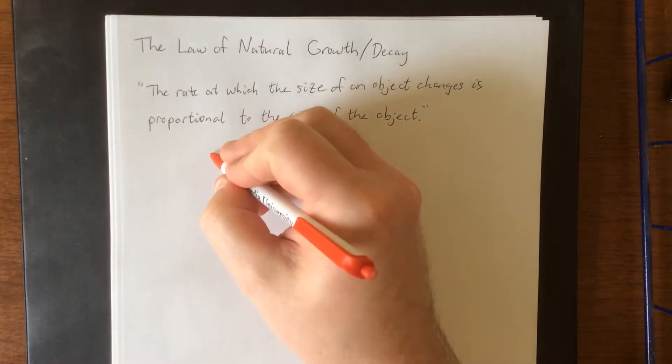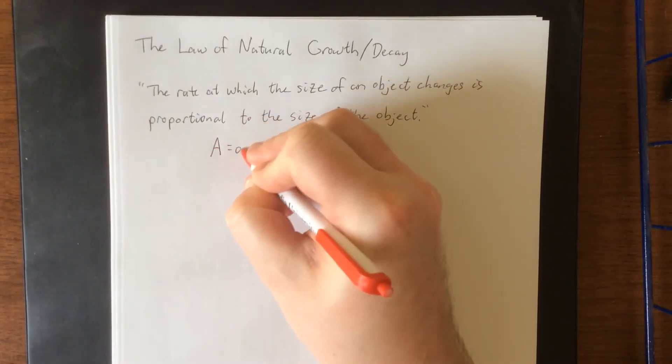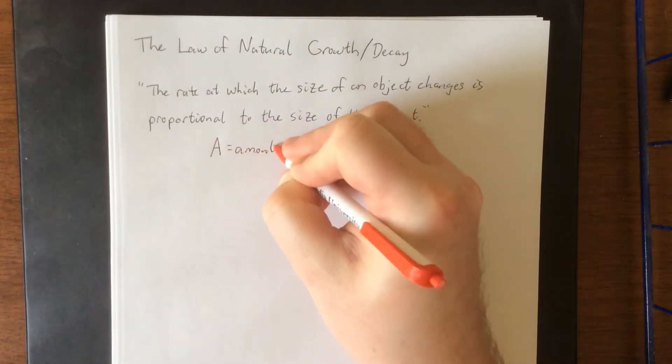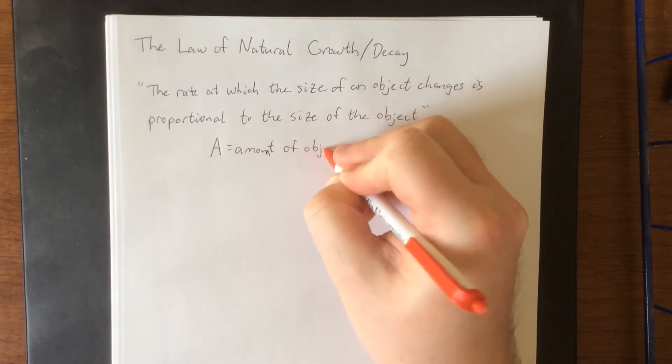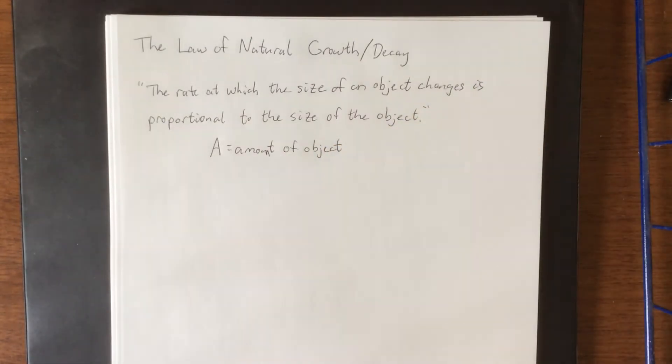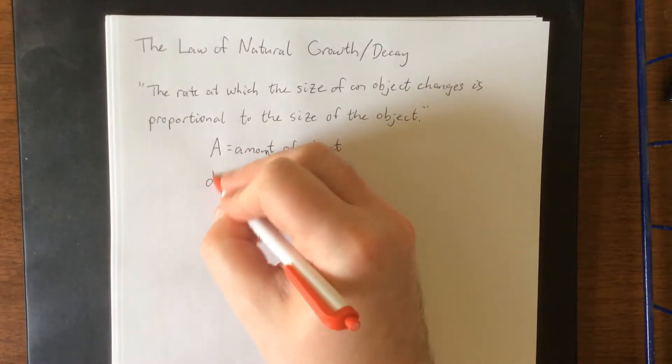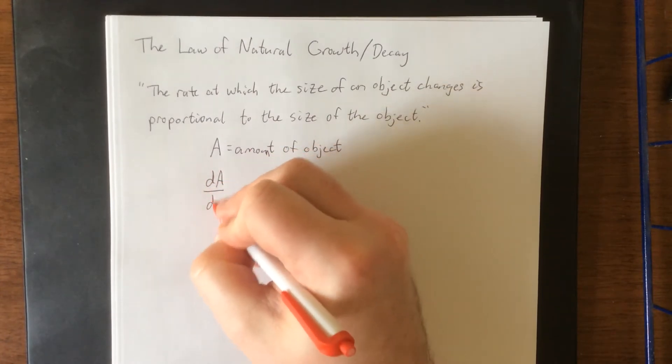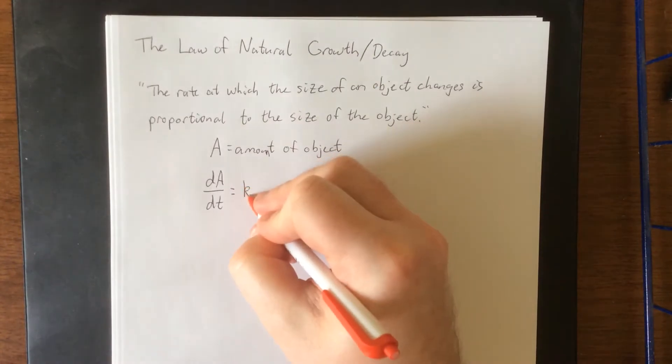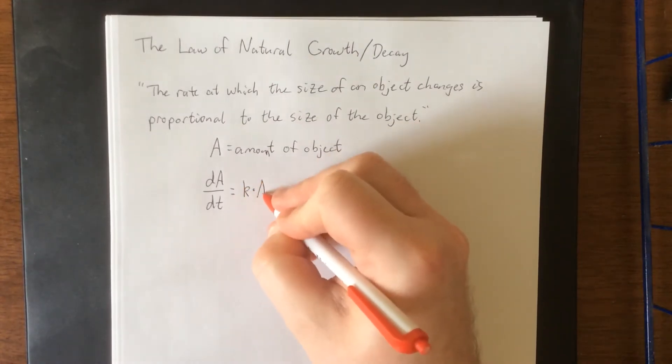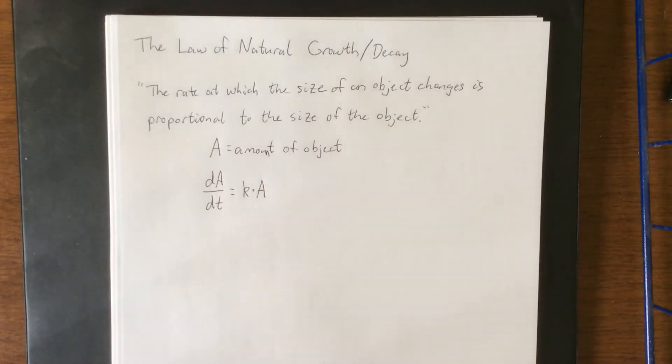We will let A refer to the amount of the object or the size of the object. So the law of natural growth and decay states that the rate at which the size of the object is changing is proportional to—that means a constant times—the size of the object, which we'll refer to as A.